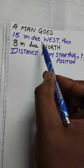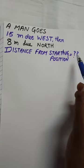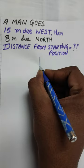A man goes 15 meters west then 8 meters north. We need to find the distance from the starting position.